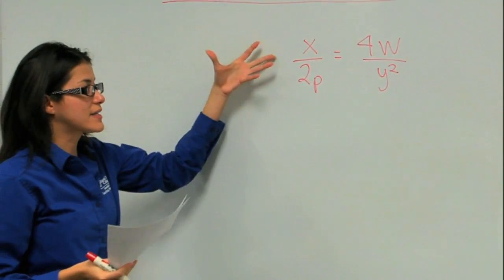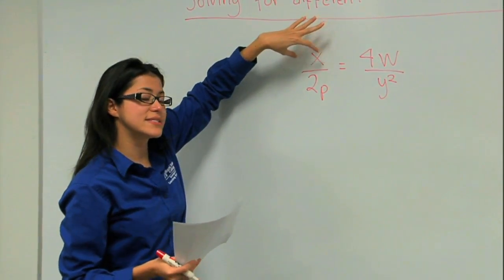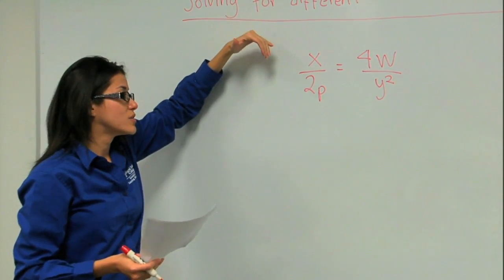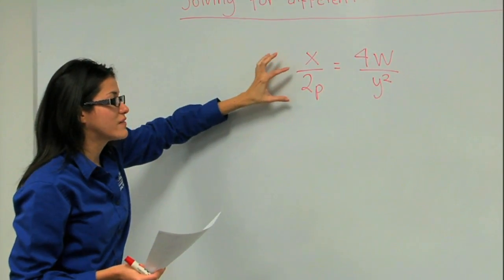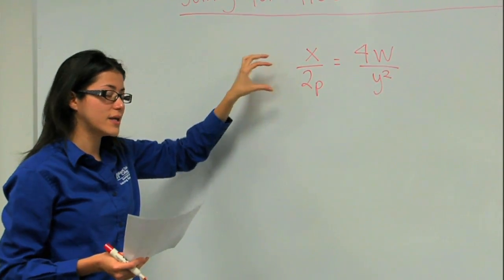So, for example, we want to solve for x. How do we solve for x? We need to have x by itself on one side, so that means we have to get rid of the 2p. How do we get rid of the 2p on this side?